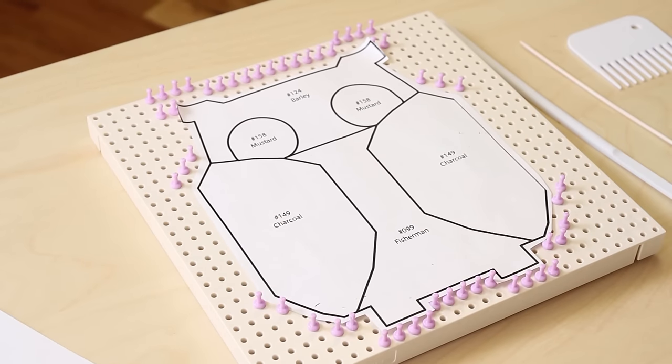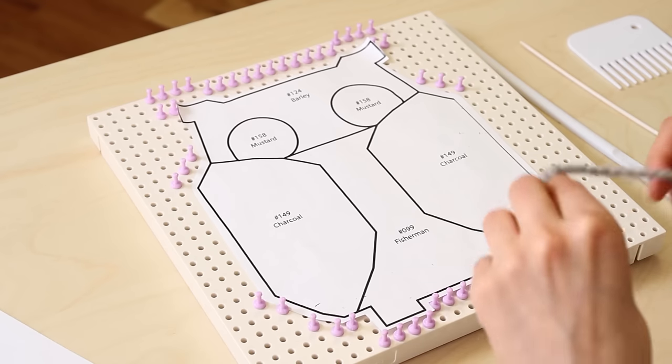I've placed my pegs according to the peg placement diagram and I've printed out two copies of the owl chart. One owl chart is to sit beside my loom base and one I've cut out to fit underneath my warp.